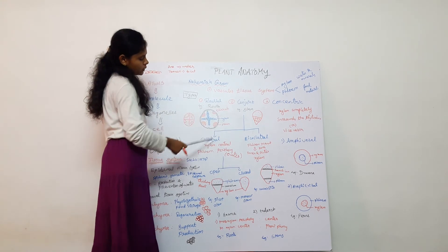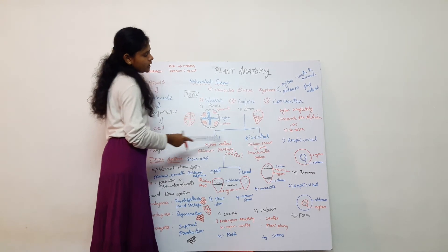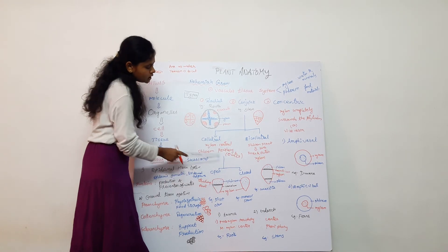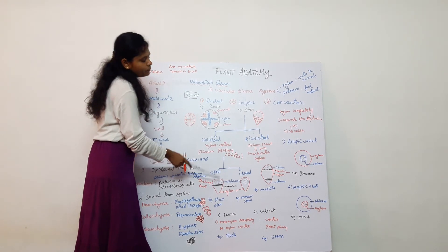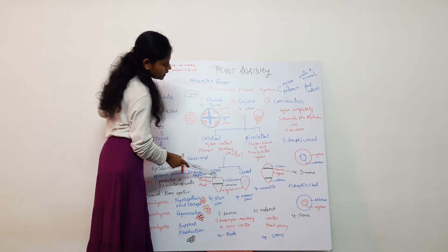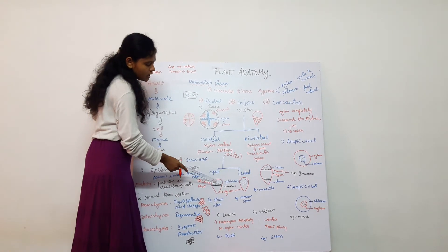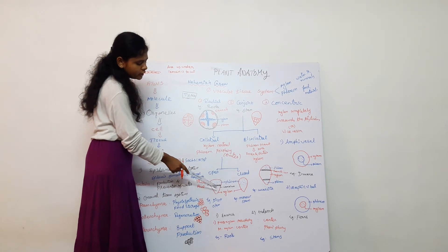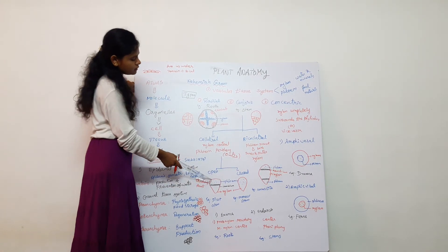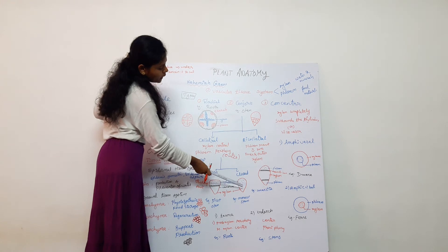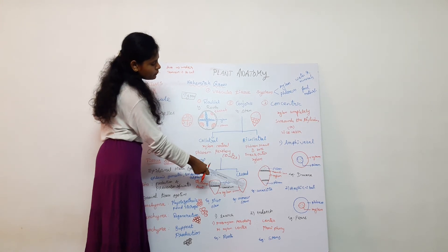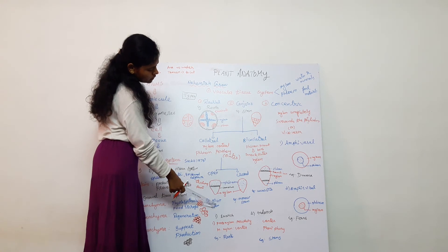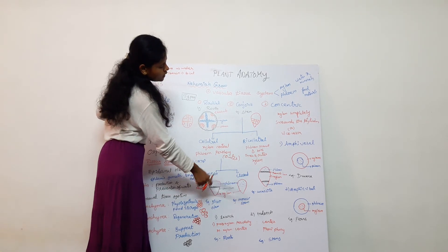Conjoint has two types: collateral and bicollateral. In collateral, xylem is in the center and phloem is in the periphery. This is of two types: open and closed. Open means cambium is present between xylem and phloem — found in dicot stems. Closed means cambium is absent — found in monocot stems.